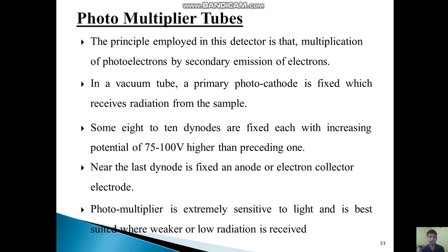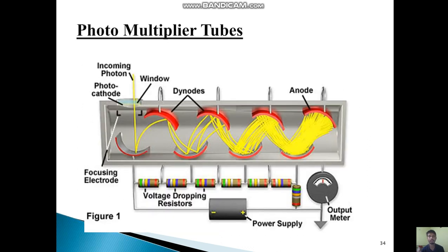Near the last dynode is fixed an anode or electron collector. This photomultiplier is extremely sensitive to light and is best suited where weaker or low radiation is received. This is the diagram of the photomultiplier tube. Here you can see the schematic diagram from where you can get an idea about this photomultiplier tube detector.